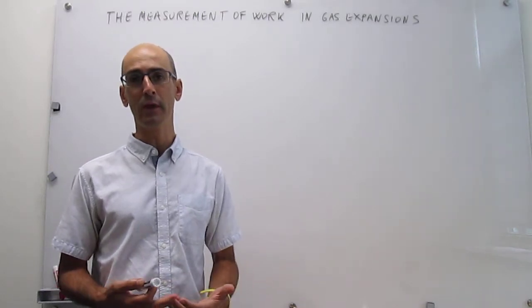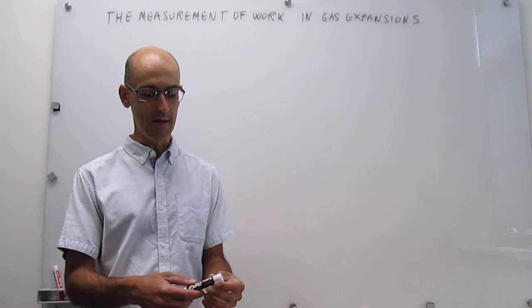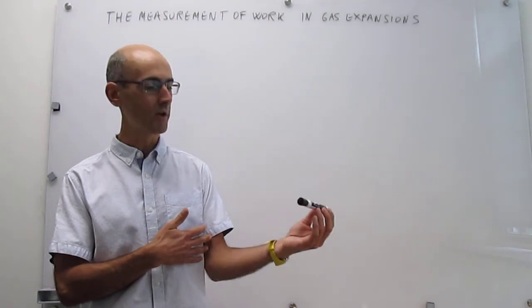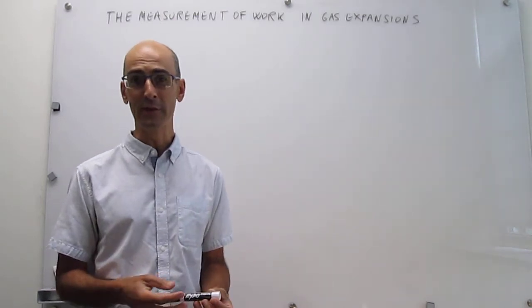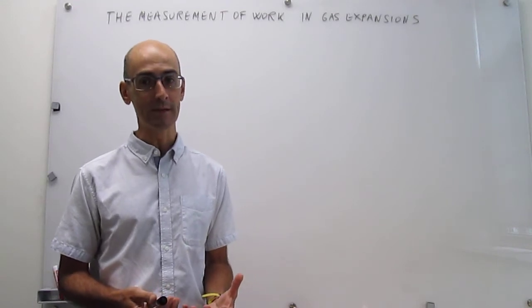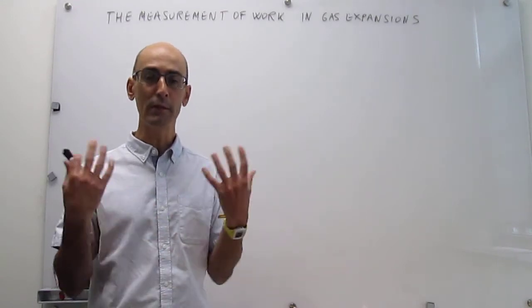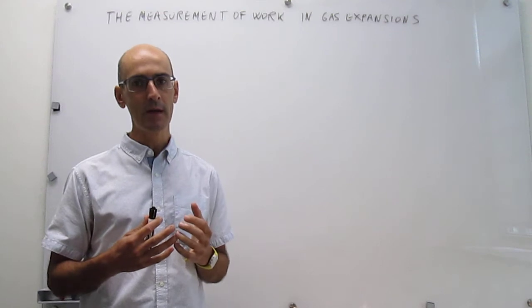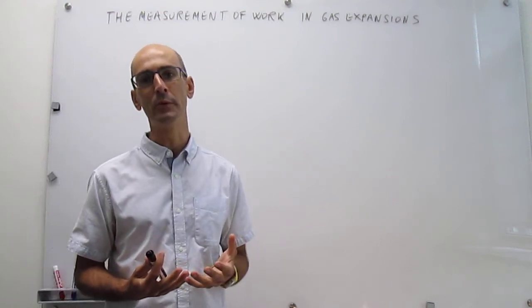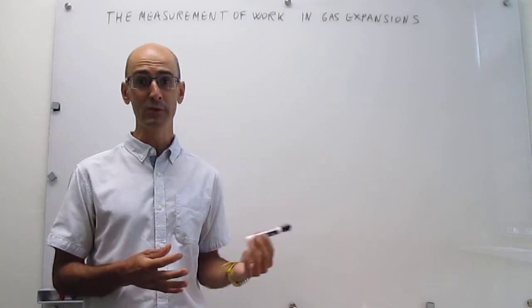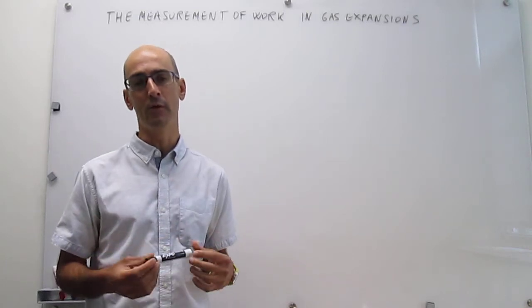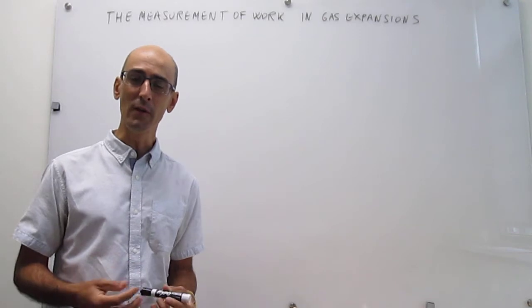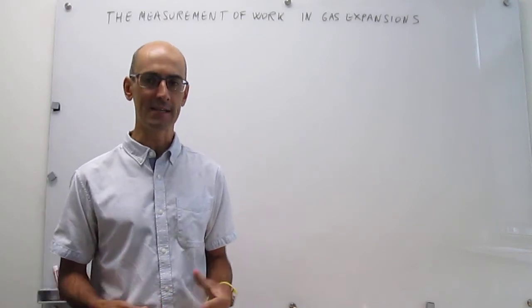There are many types of work that we could think about. For example, the fact that I'm lifting this object against gravity — that is doing some muscular work. However, the calculation of that work would be extremely difficult to carry out at this level. Another type of work would be thinking: when I'm thinking I'm pushing ions against gradients in my brain, and that is actually work because you're moving against an opposing force. Much as with muscular work, that type of motion of ions against gradients would be very difficult to calculate. So to have a convenient model that is easy to calculate, we focus again on gas expansions.